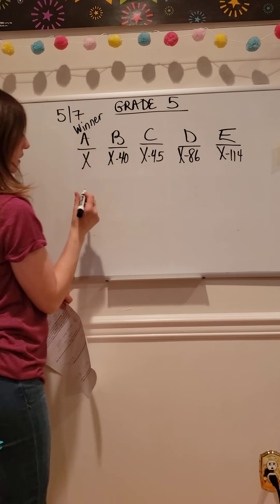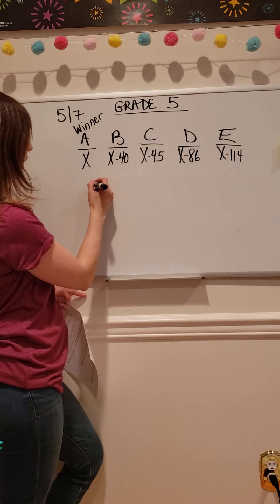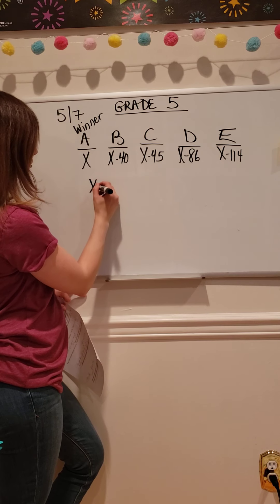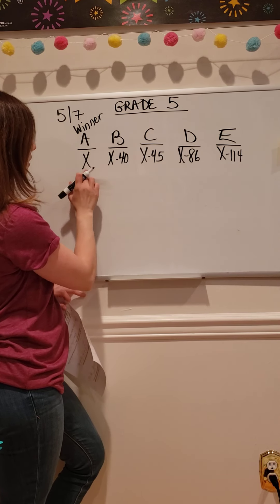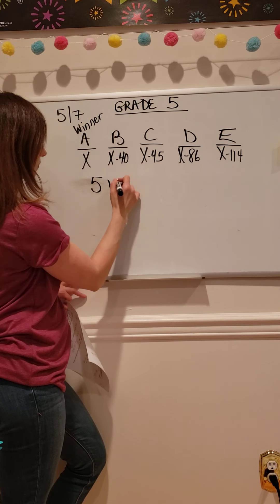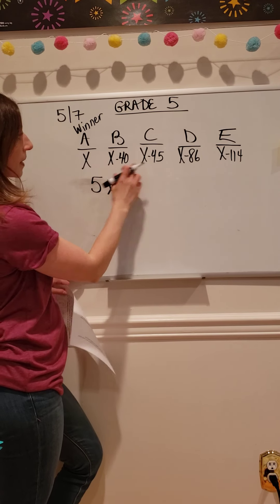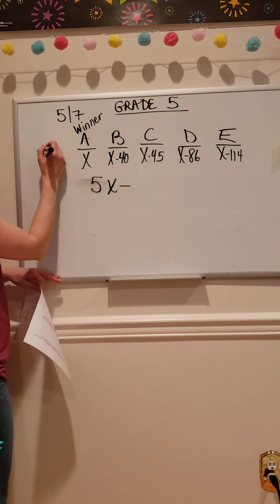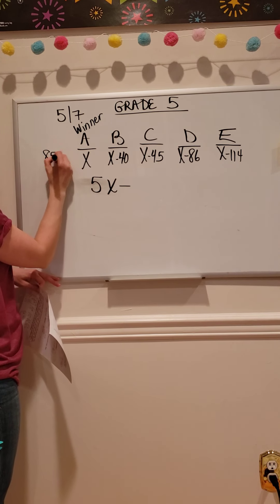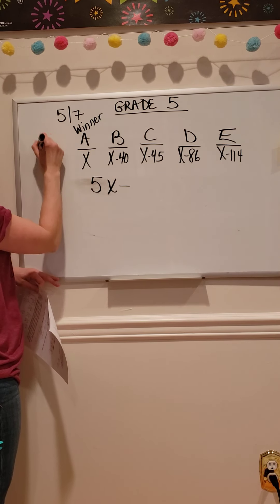So I'm going to combine all of these together. I'm going to count up my X's: 1, 2, 3, 4, 5 X's. Minus. And I'm going to add up all of these. So I have 40 and 45 is 85, 86, and 114.